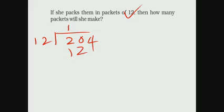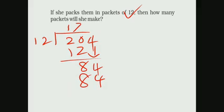1 twelve is 12. Remaining will be 8. 20 minus 12 will be 8. The 4 can be placed down. Then you can go for the 12 table. 12 sevens are 84.